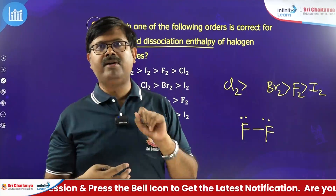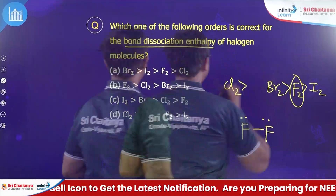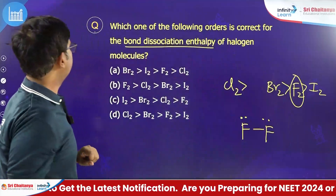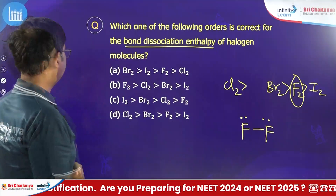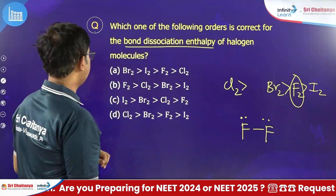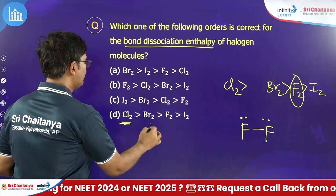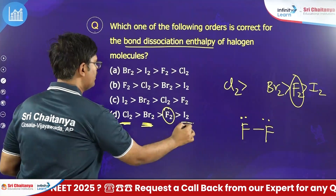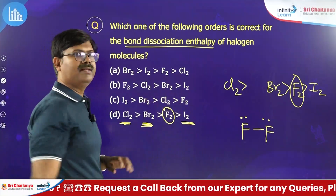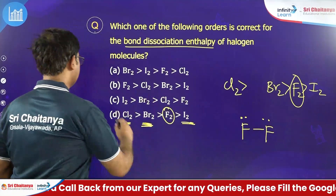So fluorine is in third place. Looking at the bond dissociation enthalpies: highest is Cl2, then Br2, then F2 in third place, then I2. This is the correct option.